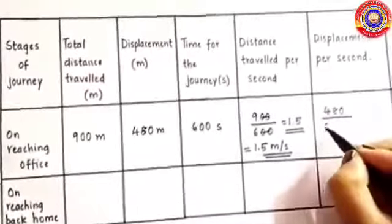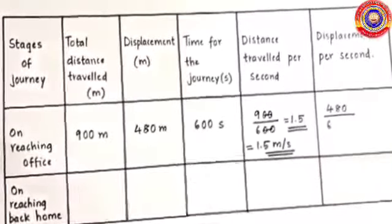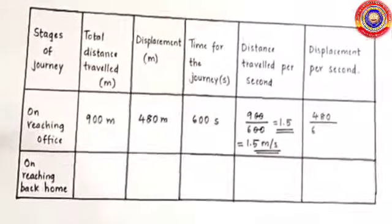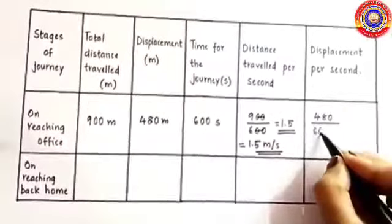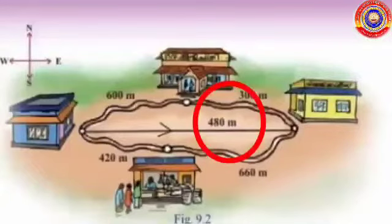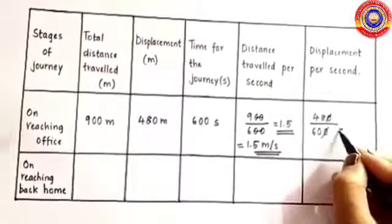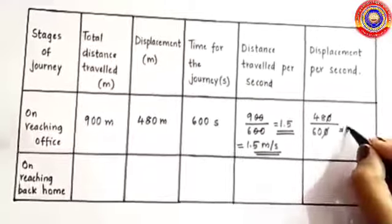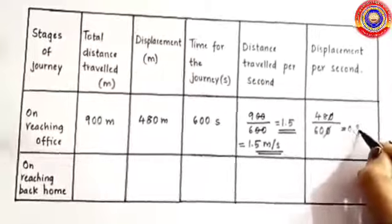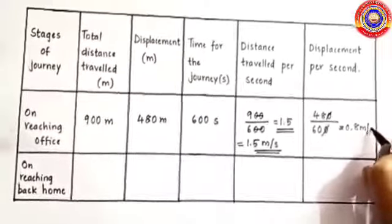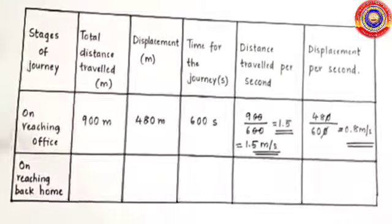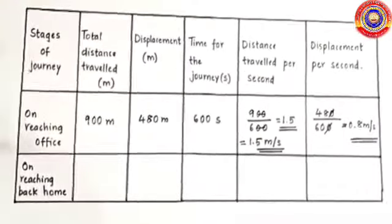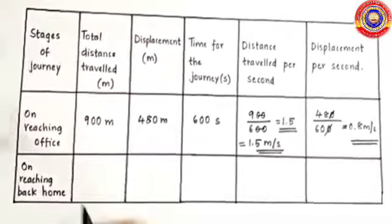Next is displacement per second. The displacement is 480 metres. So 480 divided by 600 equals 0.8 metres per second.